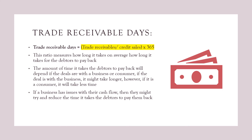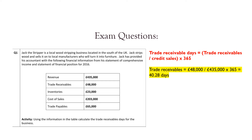Now, if a business has issues with their cash flow, then they might want to try and reduce the time it takes the debtors to pay them back. An example question: Jack the Stripper is a local wood stripping business located in the south of the UK. He strips wood and sells it to local manufacturers who turn it into furniture. He has provided information from his statement of comprehensive income and financial position. Calculate the trade receivable days. To work out trade receivable days, we do trade receivables divided by credit sales times by 365. The trade receivables are £48,000 and we use the revenue of £435,000 times by 365, giving us 40.28 days. If you can't find the credit sales, use the sales or revenue provided.